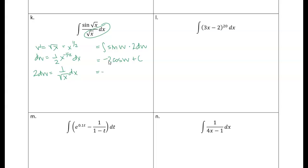And then just rewrite it in terms of x, so minus two cosine. w is the square root of x, so we'll just put that in there, and plus c.